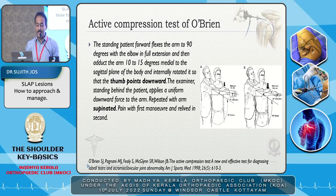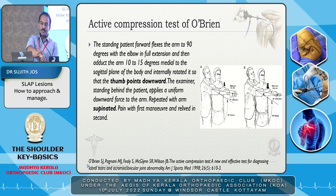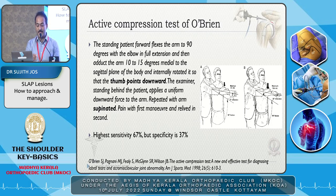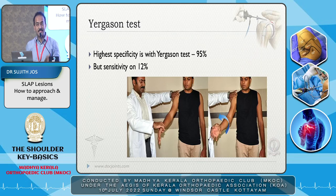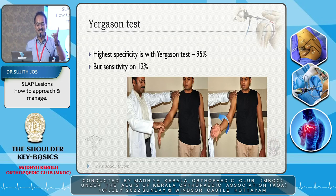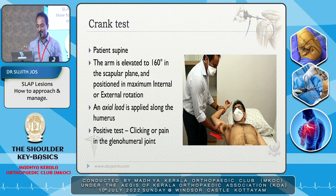With the thumb pointing downwards, a superior force is applied on the shoulder with the arm at 90 degrees and 10 to 15 degrees inward. Superior pressure applied gives pain in a SLAP tear. Repeated in supination it has high sensitivity, but specificity is only 37% — that is the Speed test. For the Yergason test, resisted active shoulder flexion with the wrist supinated and elbow extended — highly specific, but sensitivity is only 10 to 12%. That is why no one test is very sensitive or specific.